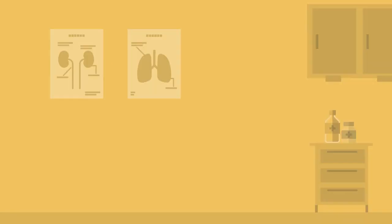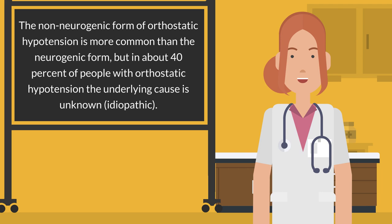The non-neurogenic form of orthostatic hypotension is more common than the neurogenic form. However, in about 40 percent of people with orthostatic hypotension, the underlying cause is unknown, referred to as idiopathic.